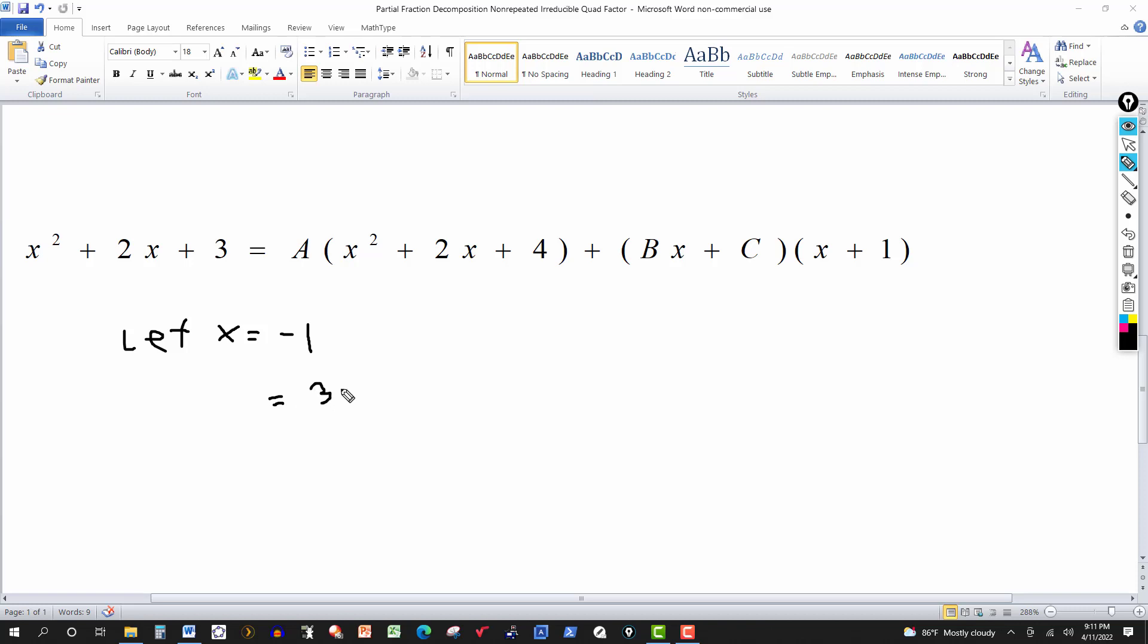And then what do I have over here on this side? So negative 1 squared is 1. Negative 1 times 2 is negative 2. And plus 3. So minus 2 and 3 is 1. And then 1 gives me 2. So I get 2. Now I just solve for A. So divide both sides by 3. So that would tell me that A is equal to 2 thirds. Okay.